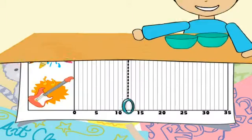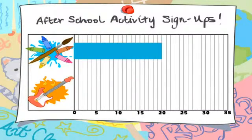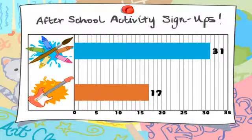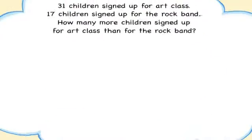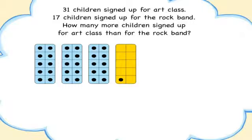Let's try another word problem. 31 children signed up for art class. 17 children signed up for the rock band. How many more children signed up for art class than for the rock band? Model the greater number with dot tiles.